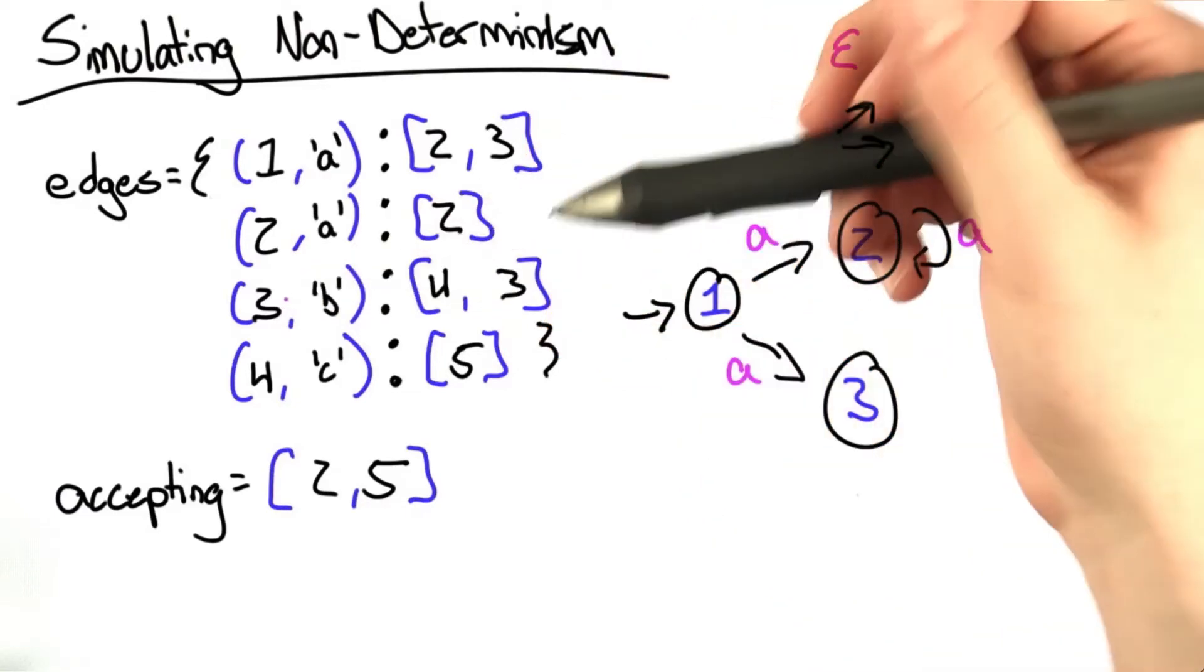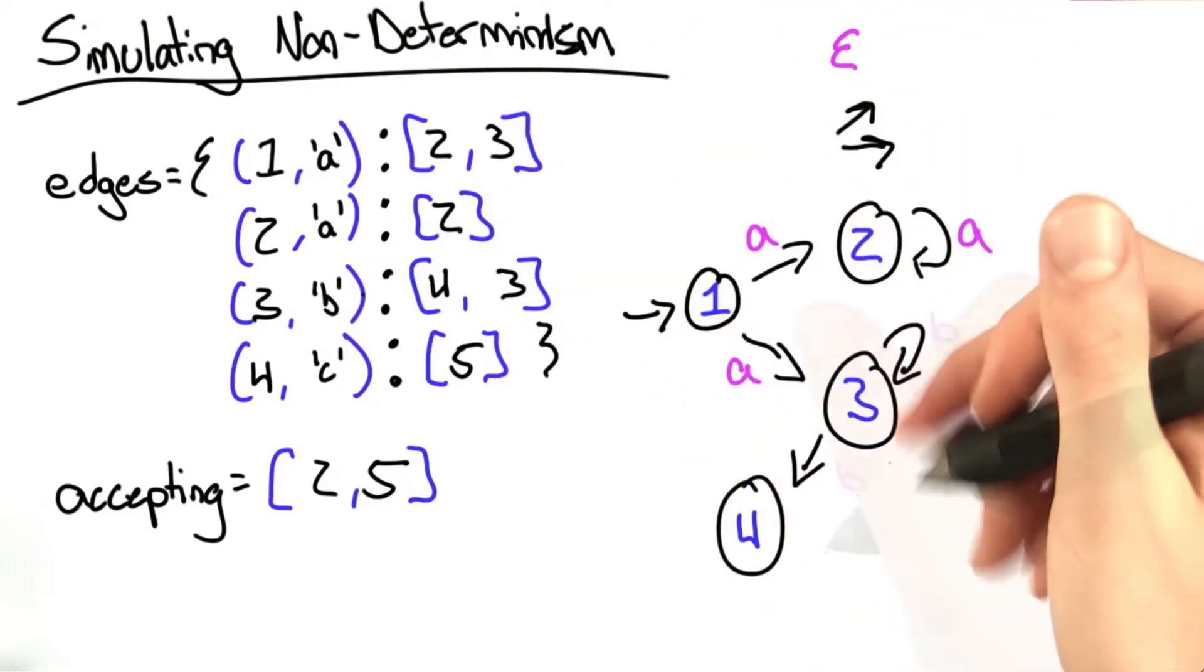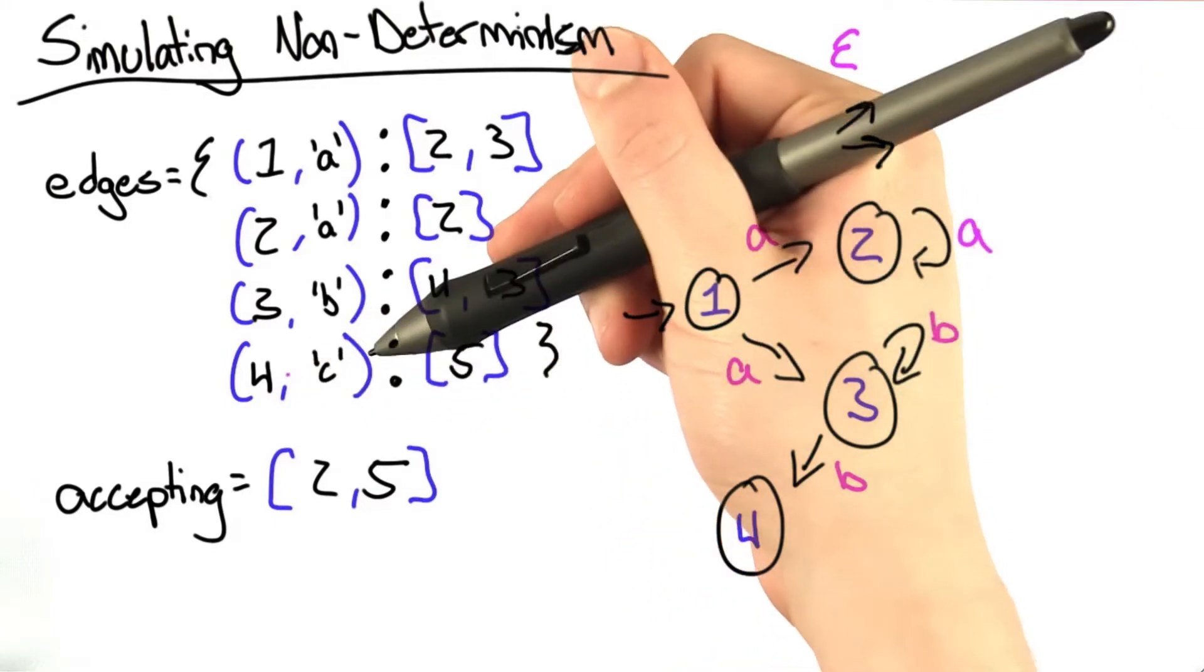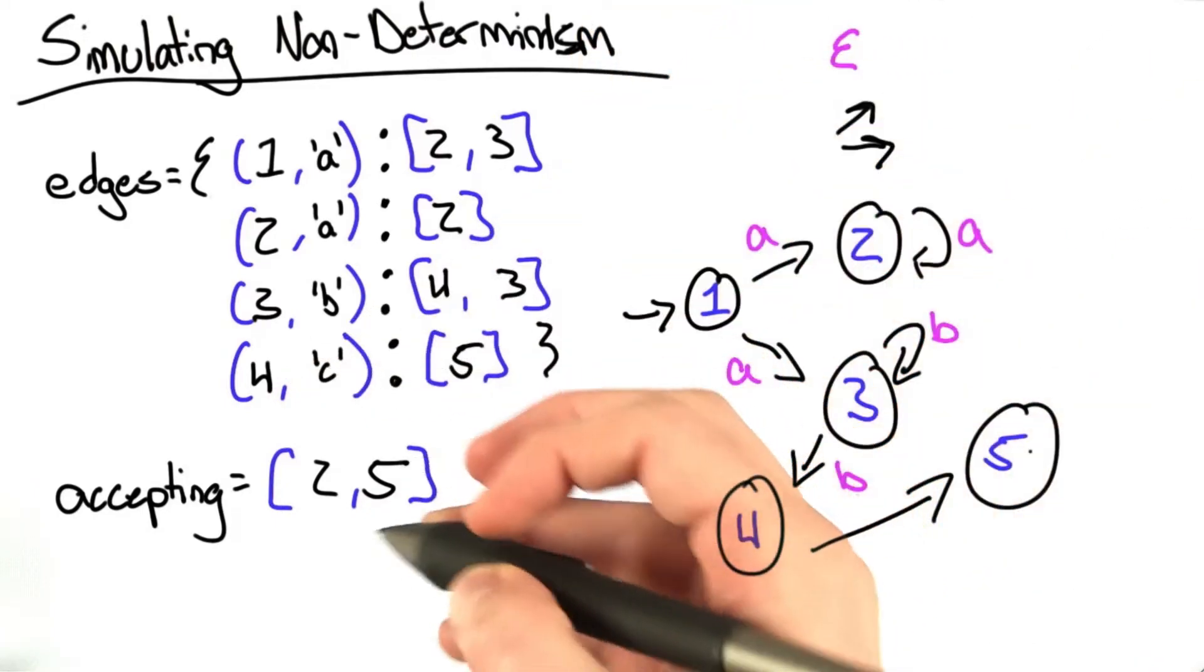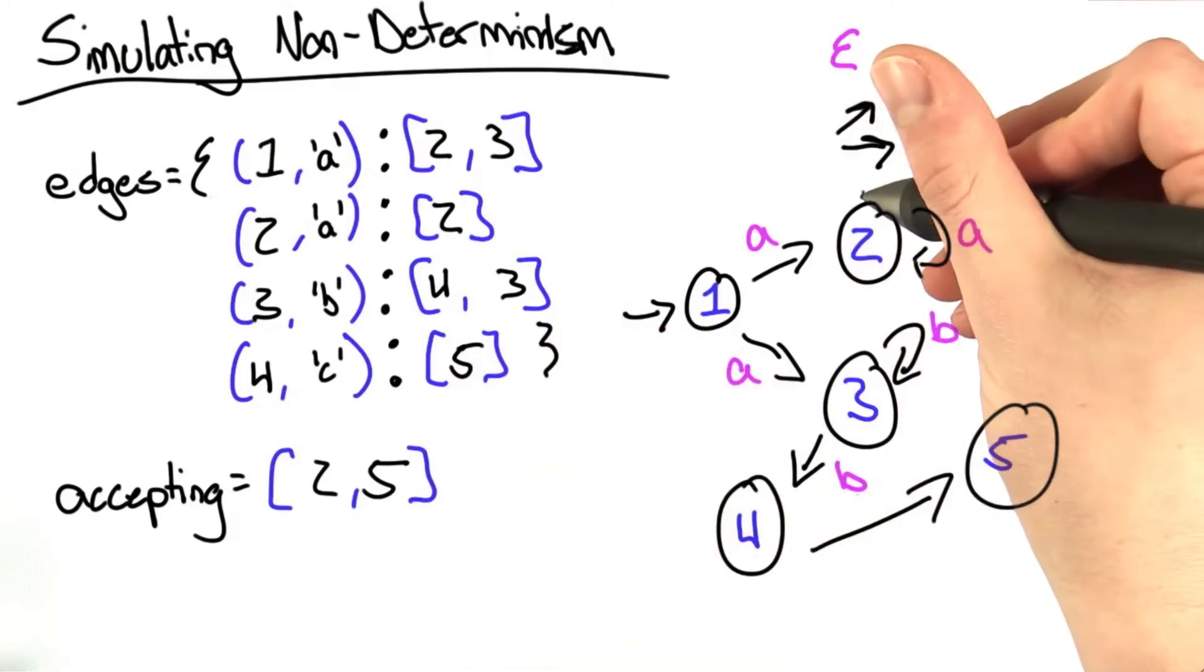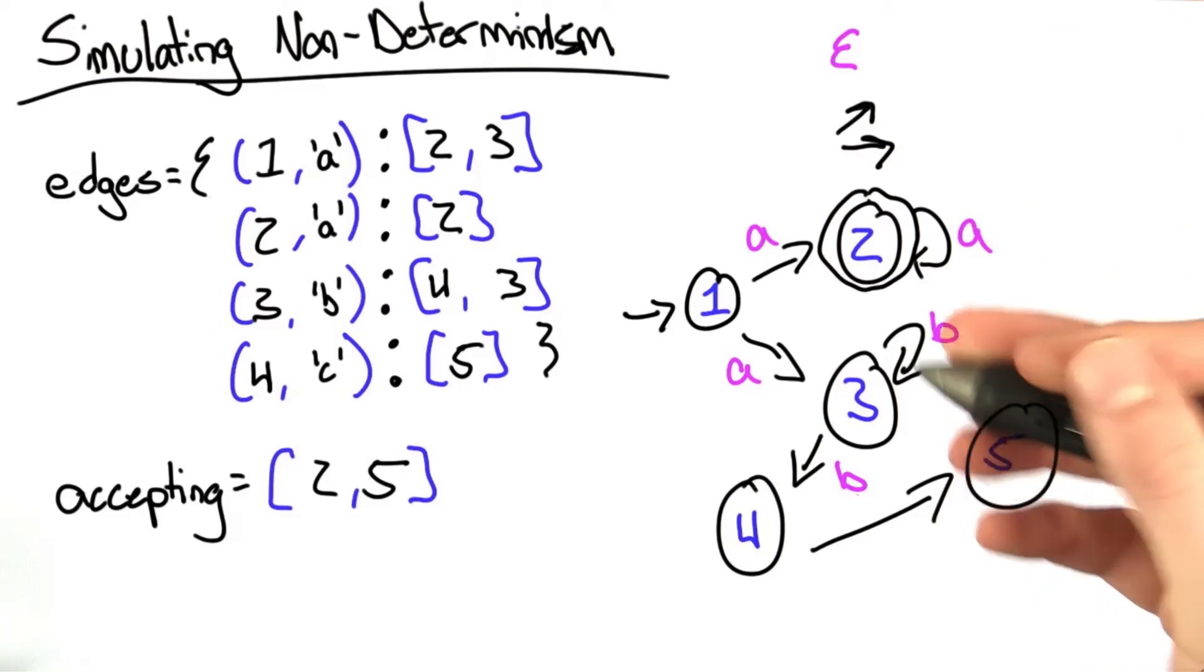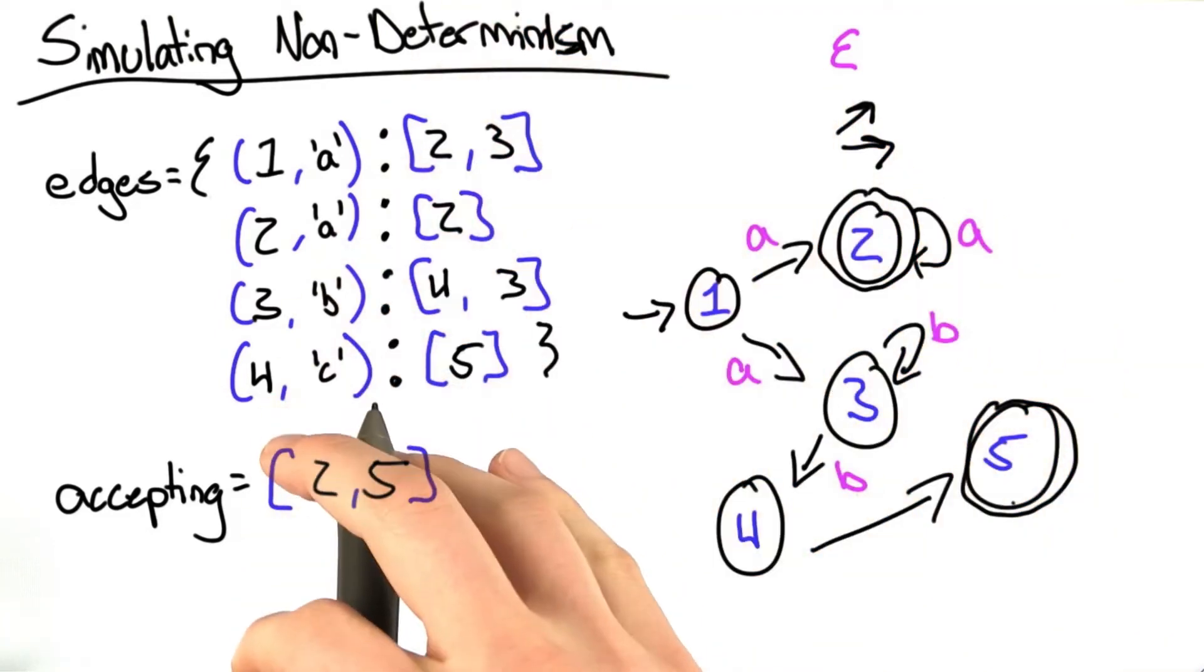From state 3, we have two outgoing edges to 3 and 4, labeled with the letter B. And from 4, we have one outgoing edge to state 5, labeled with the letter C. And lastly, we have our accepting states 2 and 5. So we'll use the notation of a double circle to indicate that it's an accepting state. And this is the finite state machine that this description represents.